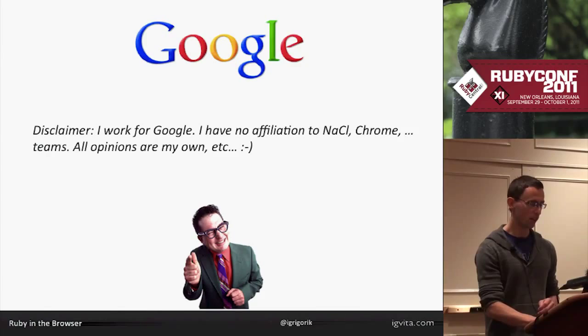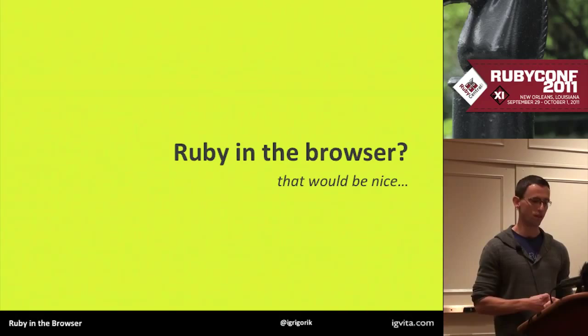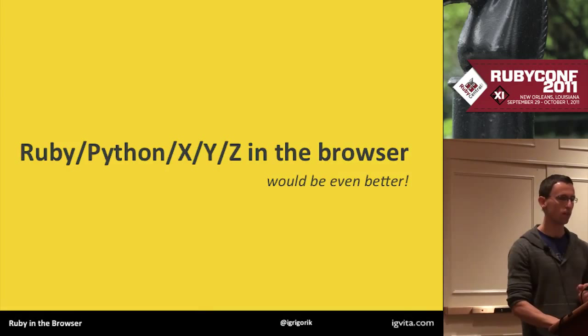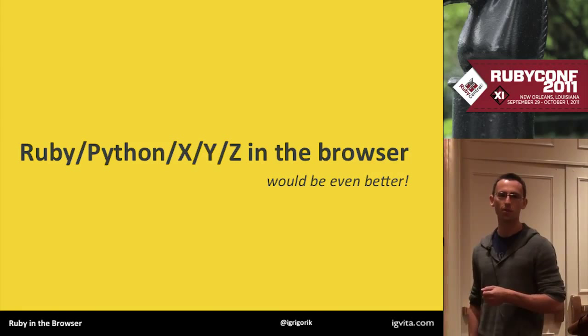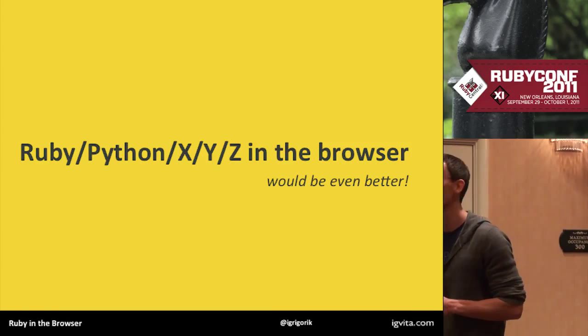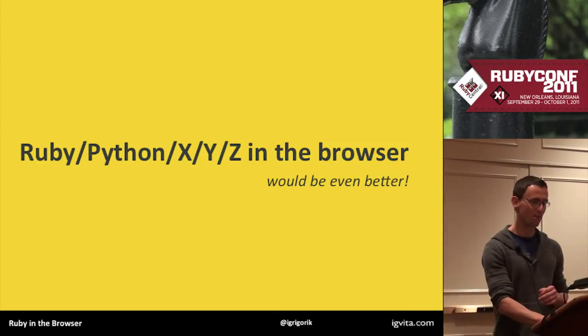Ruby in the browser - wouldn't that be nice? What would that look like? But let's take that a step further. It's not just about Ruby. I would actually really like to see all of the other languages in the browser as well. C#? Why not? Assembly? Why not? Actually, we'll see an example.